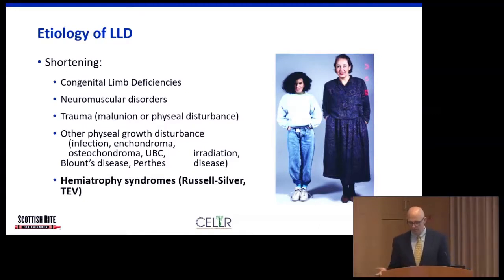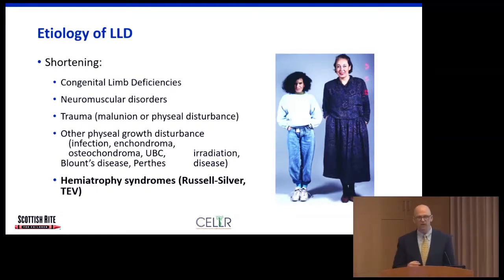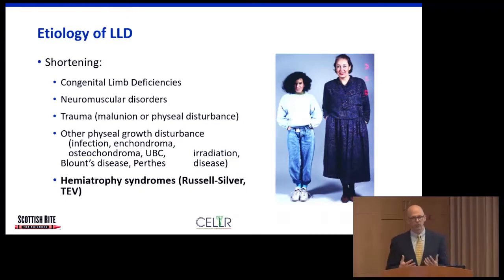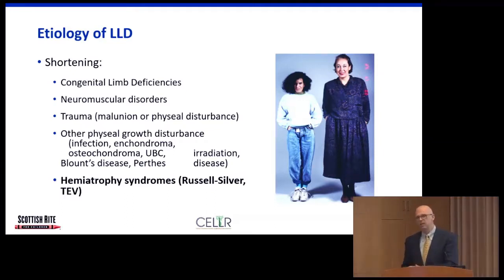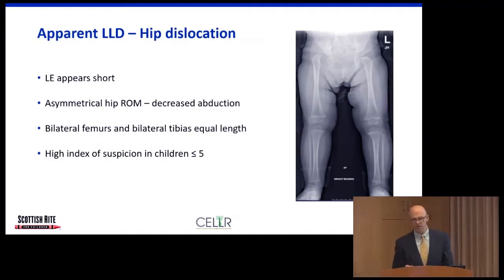Blount's disease, Perthes disease, and other conditions affecting physeal growth will induce a leg length difference. Hemi-atrophy syndromes include Russell-Silver syndrome, where patients have small stature and hemi-atrophy so one side is shorter and smaller than the other. Talipes equinovarus — clubfoot — involves abnormal development from the knee down: the foot is deformed and small, the calf muscles are atrophied, and the leg itself is smaller, inducing a limb length difference. These etiologies are generally identified before the patient presents with a leg length difference.